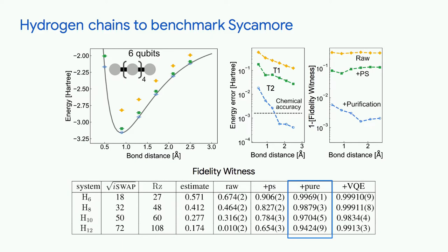We can actually account for 2-qubit errors in this particular system through a process called purification, and we can see that for even our smallest systems, we're reaching 99% circuit fidelity.